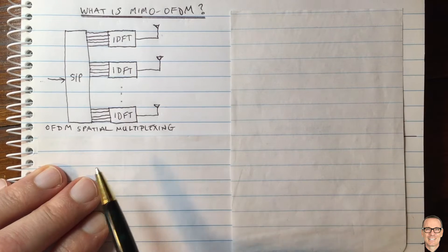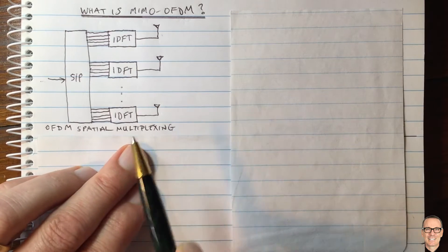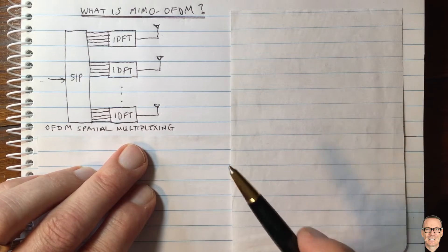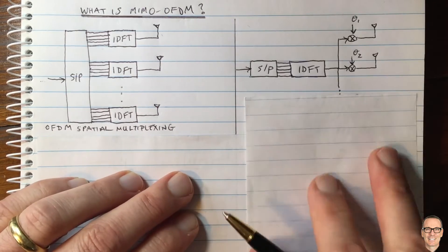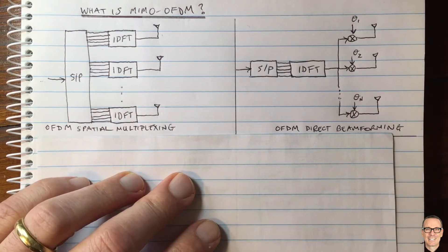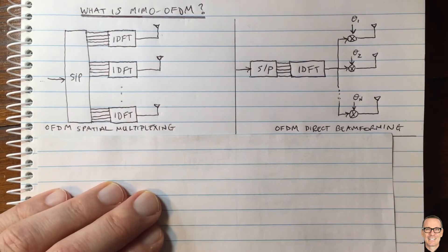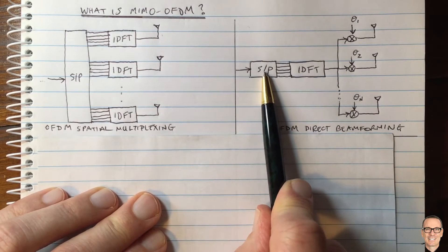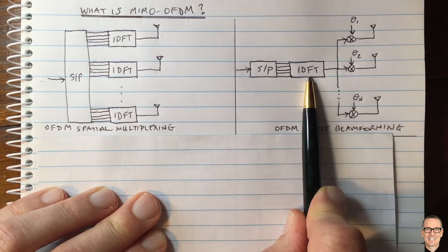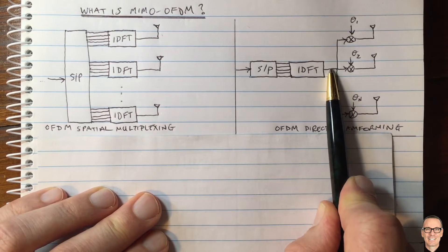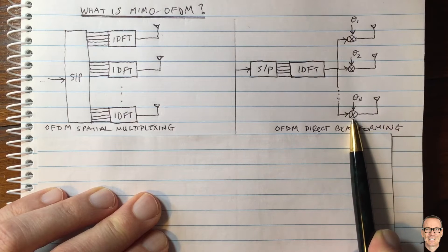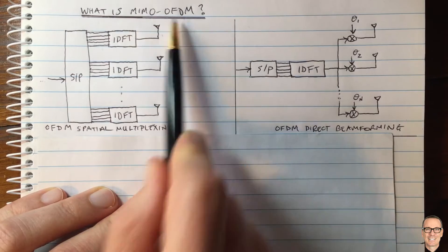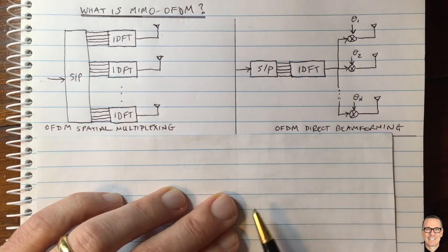But what about the other extreme of MIMO, when you have a dominant channel path and you would like to do beamforming? Here we have what we would call OFDM direct beamforming. In this case we simply have one OFDM modulator, and then we take its output and apply a standard beamforming operation.